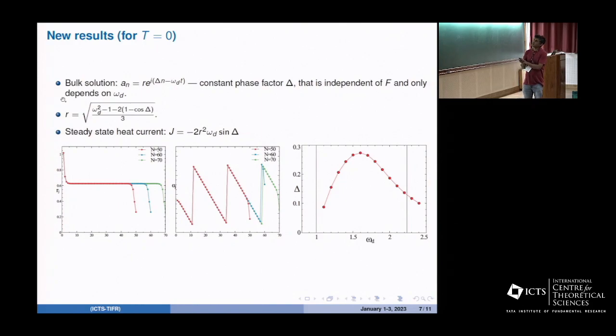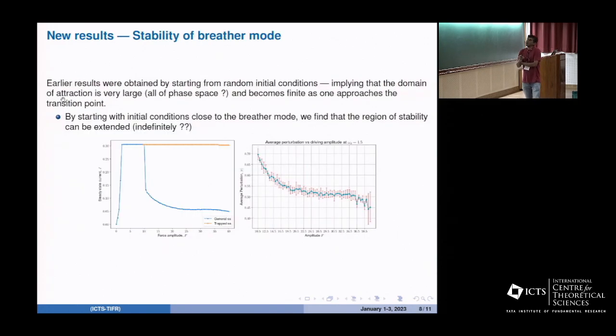These are some new results we have obtained. The solution has a slightly different form than what was given in the paper. There's a space dependence at different sites - they're not oscillating all at the same phase. There's a phase difference which changes linearly across the chain, and this phase difference has interesting frequency dependence. We can actually compute the steady state current - this is the exact form of the steady state current.